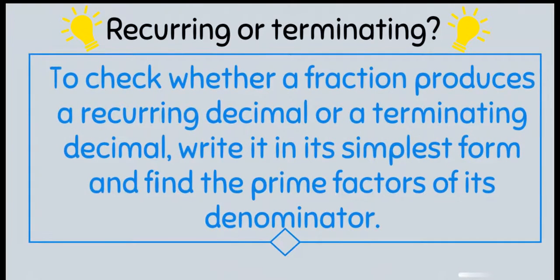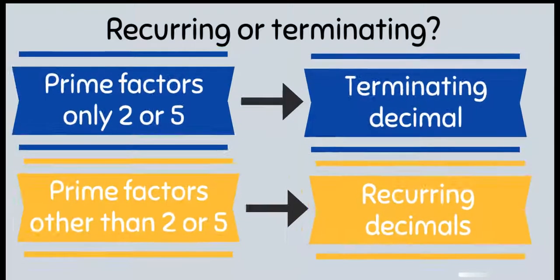To check whether the fraction produces a recurring decimal or a terminating decimal, write it in its simplest form and find the prime factors of its denominator. Here is what you need to know.